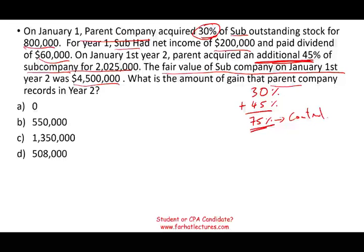They could ask us what's the value of the investment at the end of year one, or different questions, but they're asking us what should be recorded in year two. If you read the problem carefully, you'll notice we went from a 30% interest to 75%. Remember, 50% plus will give you control over the company. So we had an equity investment, and now we have control — we have to make a fair value adjustment, recording a gain or loss in comparison to the prior period.